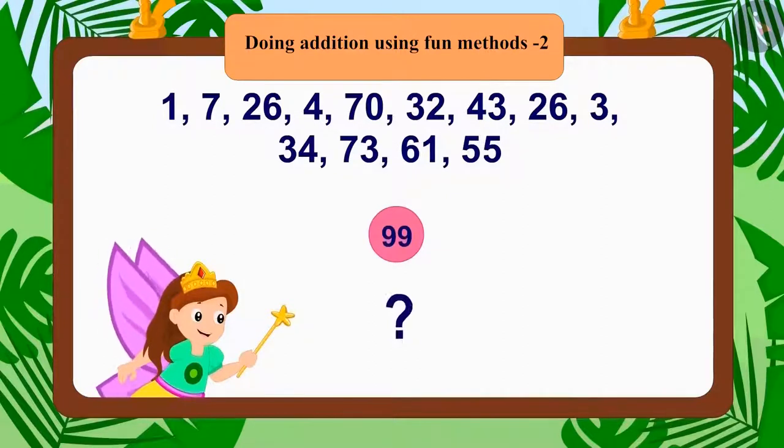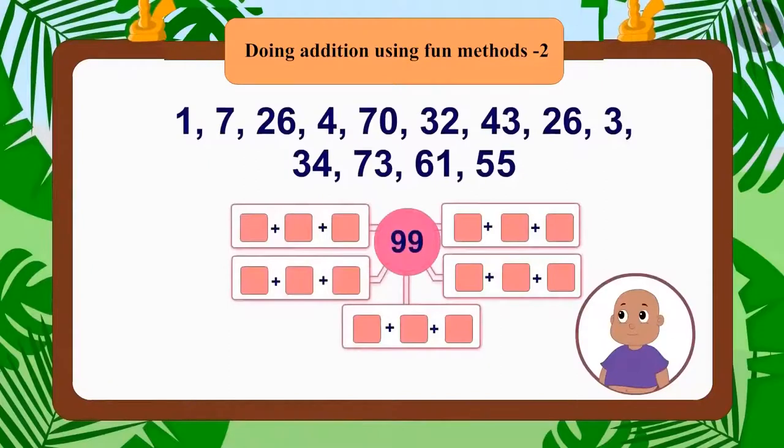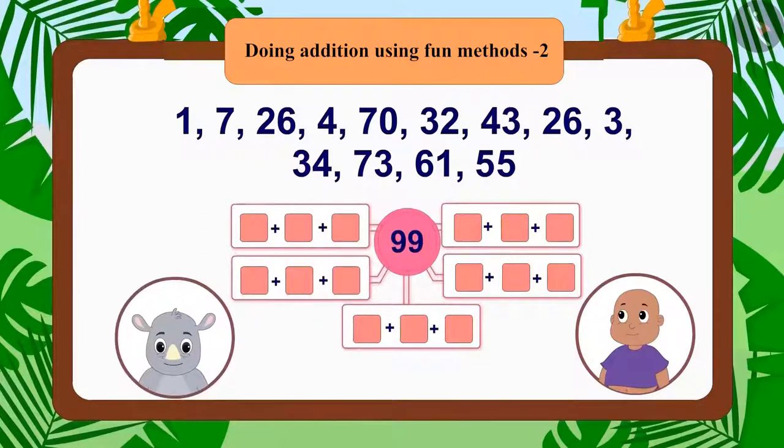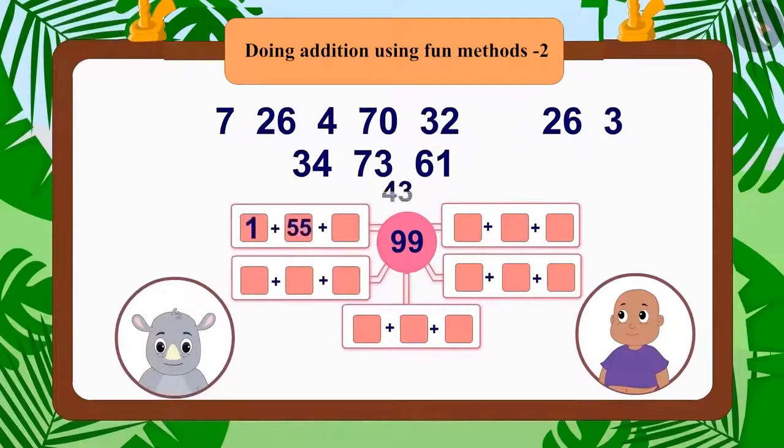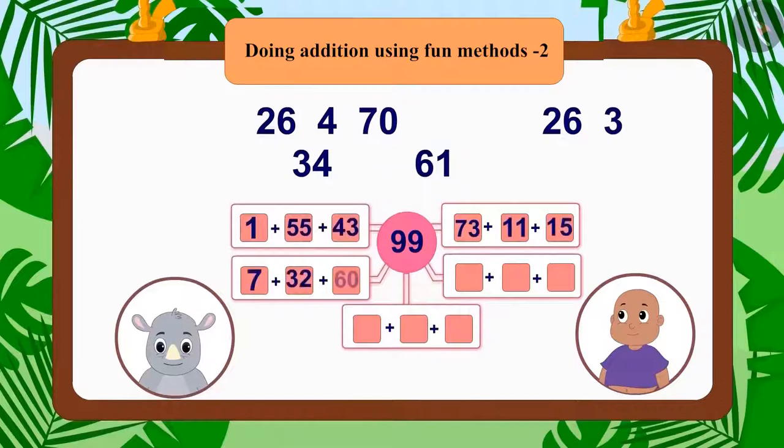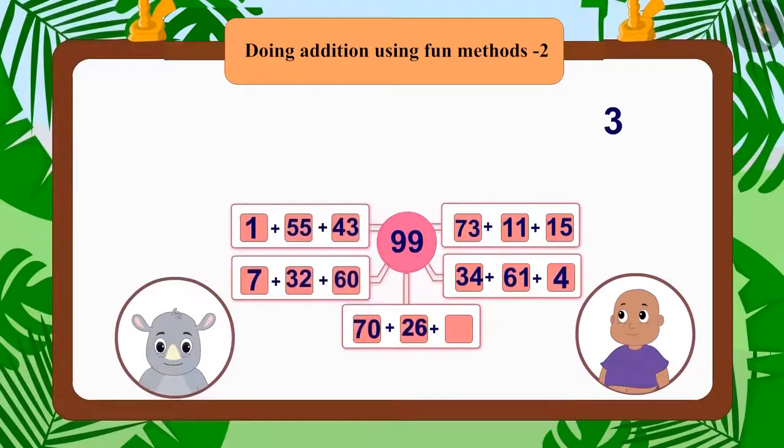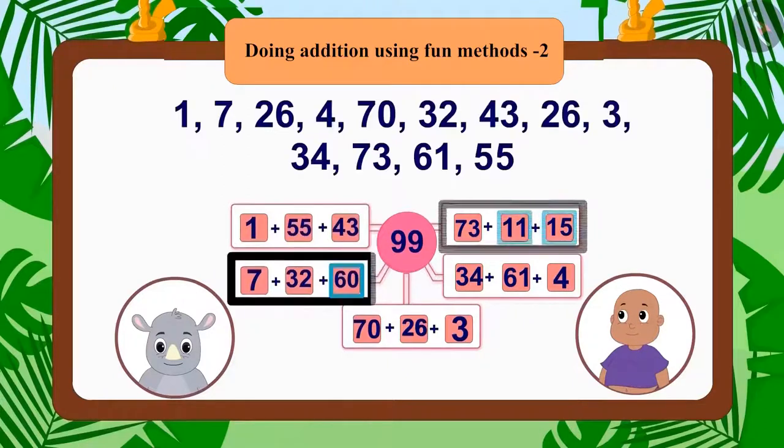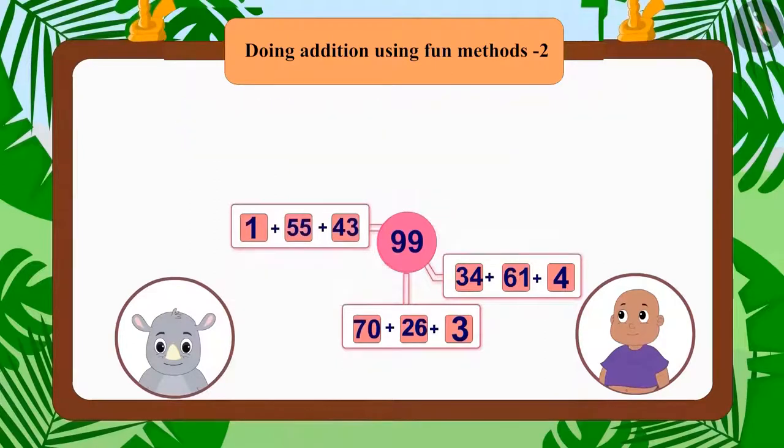This time there were more numbers and Chanda could not help him. Gaggu then helped Bablu in finding a solution to this puzzle. Gaggu made a list of what number would have to be added to get 99 from each number. Then he removed those pairs of numbers that were not in the list given by the angel. In this way, Gaggu had three answers to the puzzle.